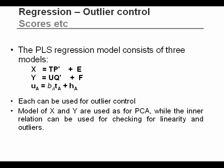Here the different submodels in a PLS regression model are shown: the model of X — scores times loadings; the model of Y — scores times loadings; and the inner relation relating the scores in X with the scores in Y for the same component number. So score 1 in X to score 1 in Y, etc. Each of these can be used for outlier detection. The X and Y parts are used exactly as in PCA. The inner relation can be used for checking linearity and for outliers.